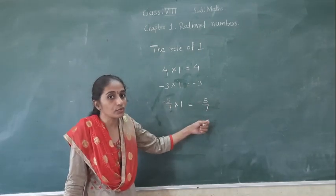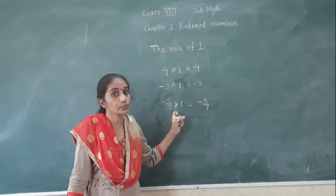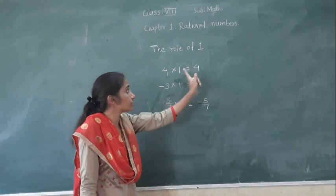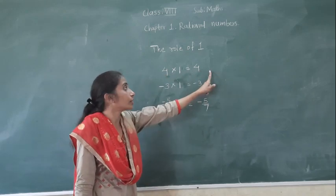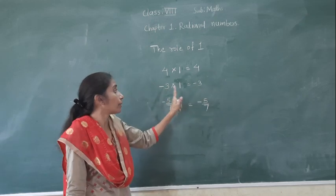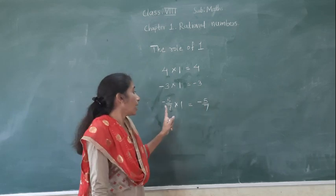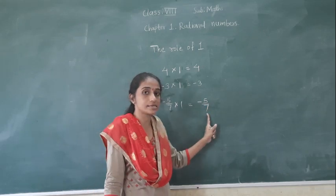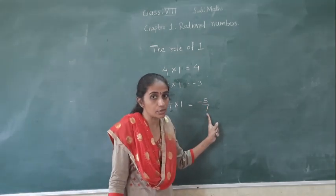So what is the role of 1? If we multiply any number by 1, the answer is the number itself. We multiplied for whole number by 1, we got the whole number again. We multiplied for integer by 1, we got the integer again — that is minus 3. And here we multiplied for a rational number by 1, we got the same answer, minus 5 upon 7, that is a rational number.